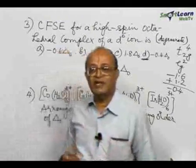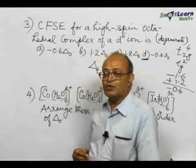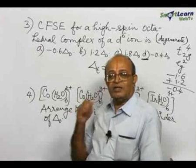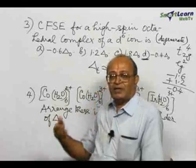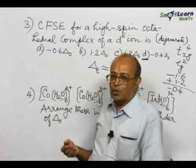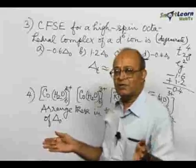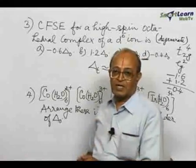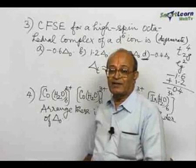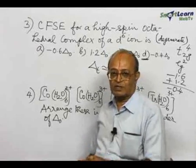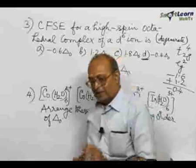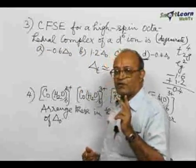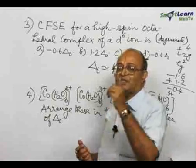If you change the ligand, delta O values will change. For each ligand there will be a different value of delta O, and from these you get what is called the spectrochemical series. The strength of the ligand deciding delta O is arrived at. Nature of ligand is point number 1. Point number 2, which decides the magnitude of delta O, is the charge.